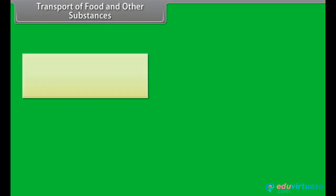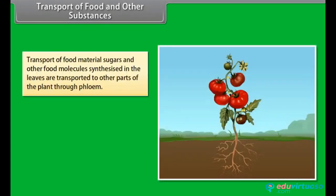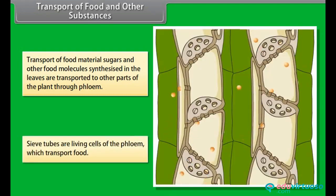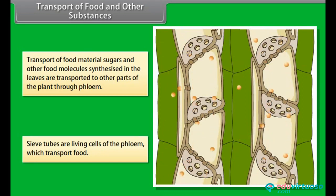Transport of food and other substances: sugars and other food molecules synthesized in the leaves are transported to other parts of the plant through phloem. Sieve tubes are living cells of the phloem which transport food.